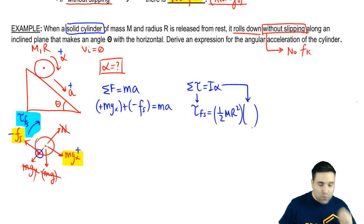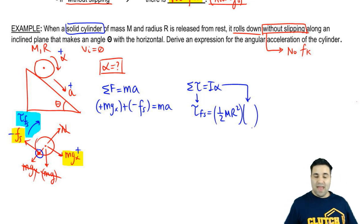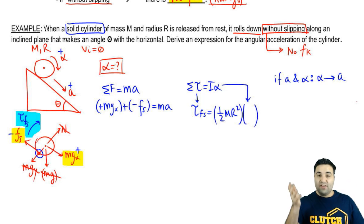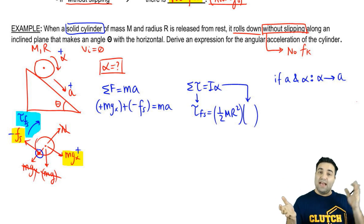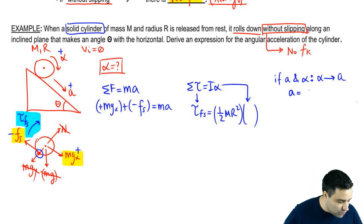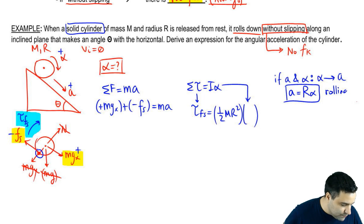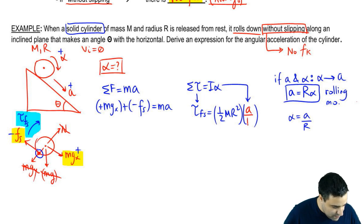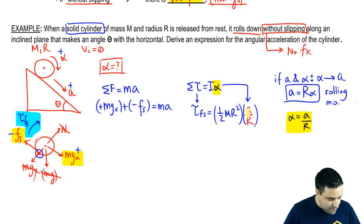In the torque equation, we want to replace alpha with A. If you have A and alpha, you want to get rid of alpha and change it into A, so that instead of having A and alpha, you have A and A. To do this, we use the fact that A equals big R alpha — this is rolling motion — so I can rewrite alpha as A over big R. I'm going to substitute A over big R in place of alpha.